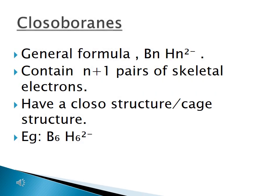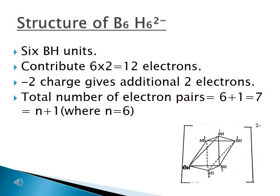Let us now discuss closo boranes. The general formula is BₙHₙ²⁻. They contain N plus 1 pairs of skeletal electrons and have a closo or cage structure. Example: B6H6²⁻. In this structure you can see 6 BH units which contribute 6 × 2 = 12 electrons to the bonding molecular orbitals of the skeletal structure. The minus 2 charge gives 2 additional electrons, that is 1 pair. Therefore, total electron pairs = 6 + 1 = 7 = N + 1 where N = 6.